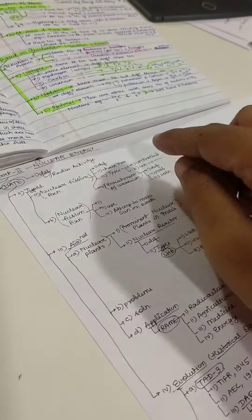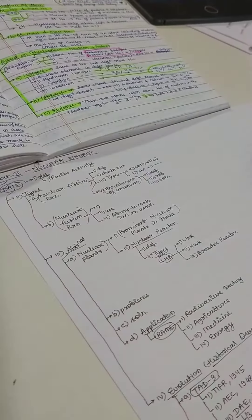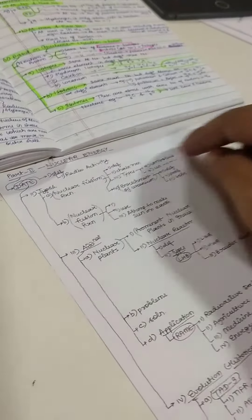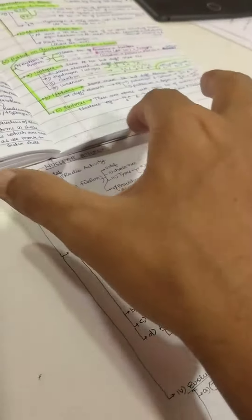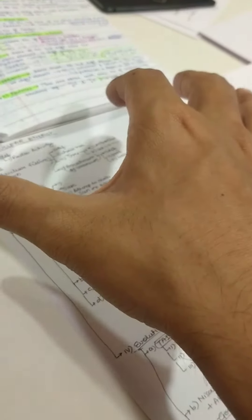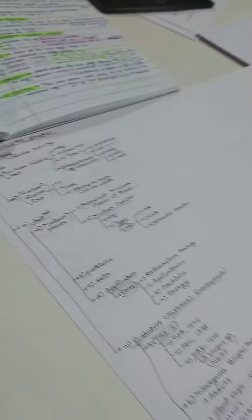So instead of linear note making, before you write definition and then note it, then chain reaction, first of all you should create a framework because with the framework you can control that you have to summarize your notes in the space.